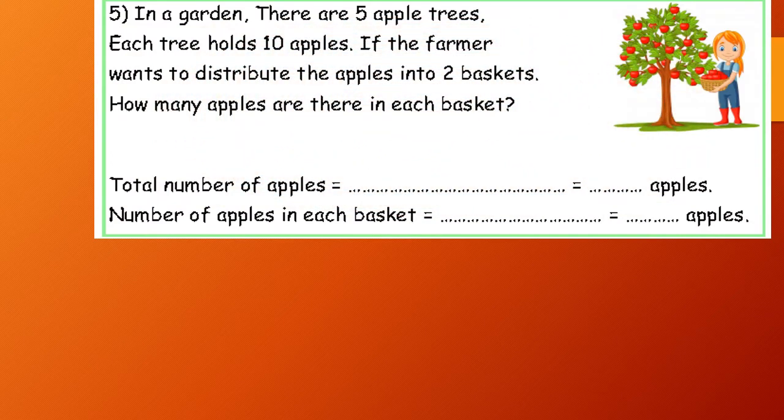Number five: In a garden, there are five apple trees. Each tree holds 10 apples. If the farmer wants to distribute the apples into two baskets, how many apples are there in each basket?